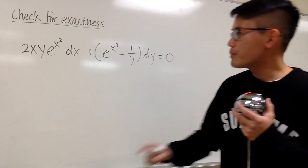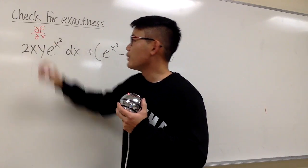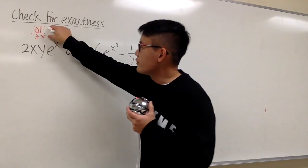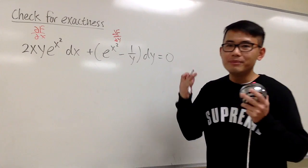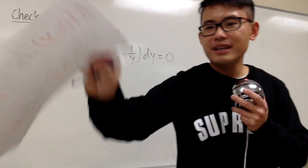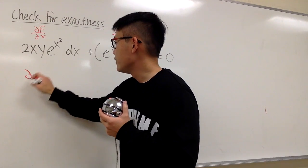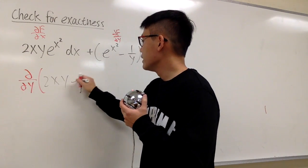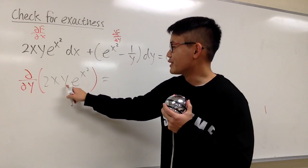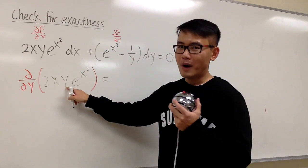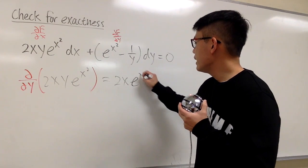Now let's check if this equation is exact. Remember, M hopefully represents the partial of f with respect to x, so we have to do the mixed partial and differentiate M with respect to y. I'm going to differentiate the expression 2xye^(x²) with respect to y. In this case, y is the variable, so it's y to the first power and everything else is a constant. When you differentiate y to the first power, you get 1 and the rest stays. That means we have 2xe^(x²).